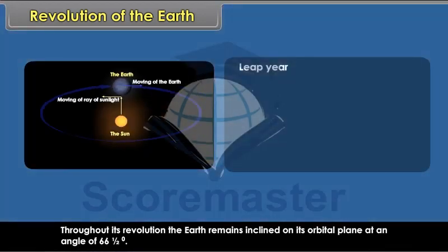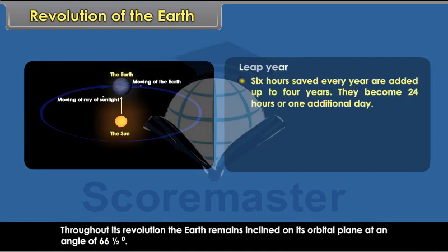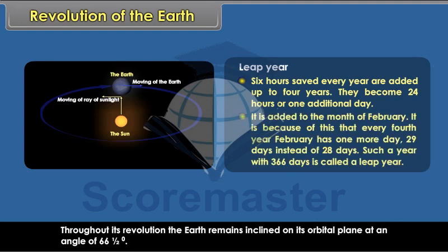Leap Year. Six hours saved every year are added up over four years. They become 24 hours, or one additional day. It is added to the month of February. It is because of this that every fourth year, February has one more day — 29 days instead of 28 days. Such a year with 366 days is called a Leap Year.